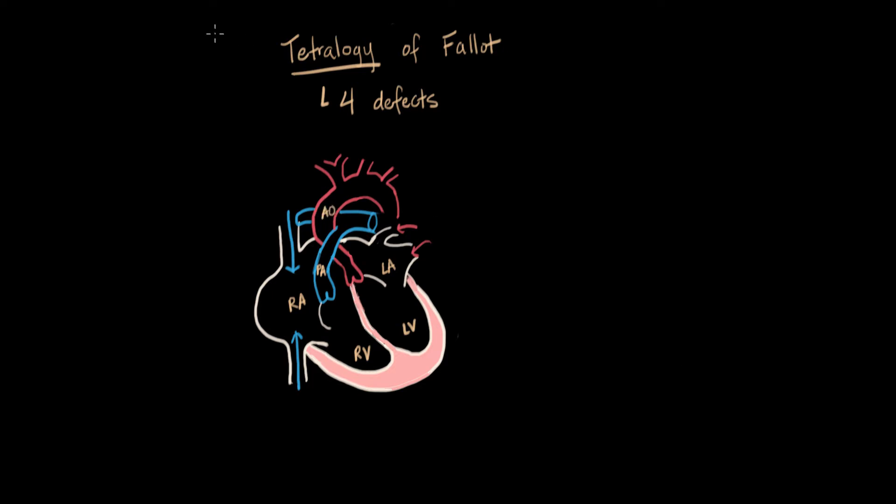So in tetralogy, the first defect that we worry about, some would argue it's the defect that governs how this heart functions, is called pulmonary stenosis. So pulmonary, you know, has to do with the lungs. In this case, it's referring to the valve that leads blood to the lungs. So the pulmonary valve is right here.